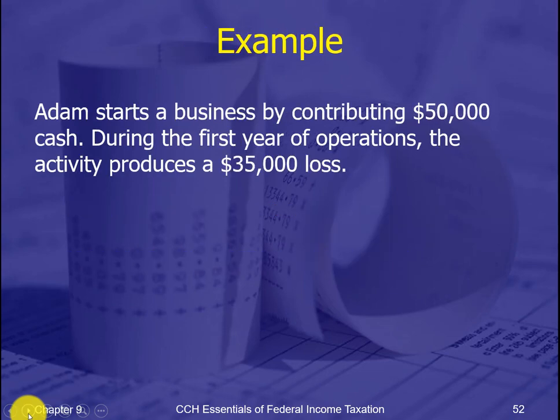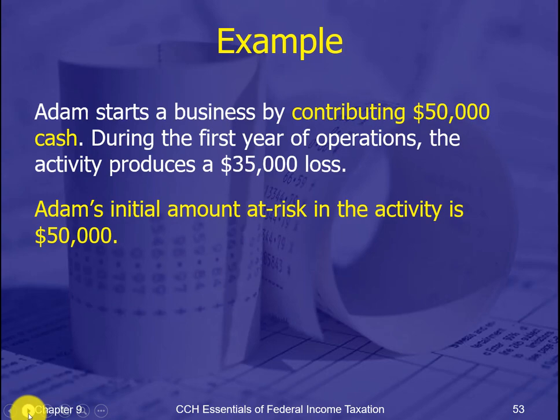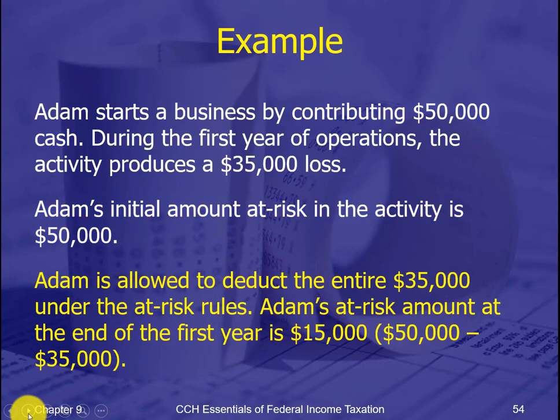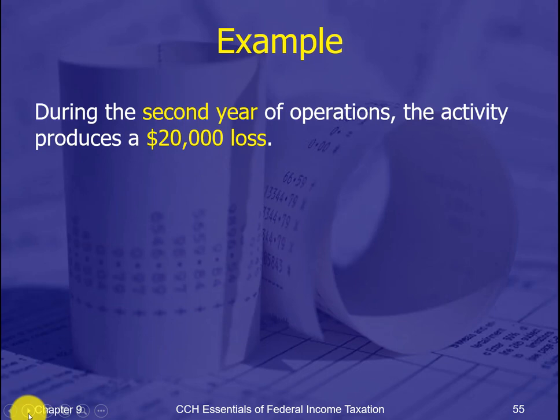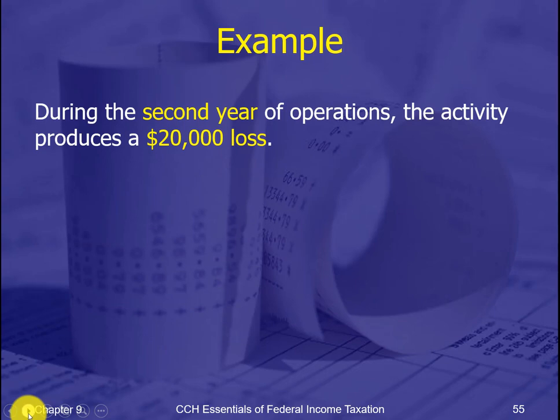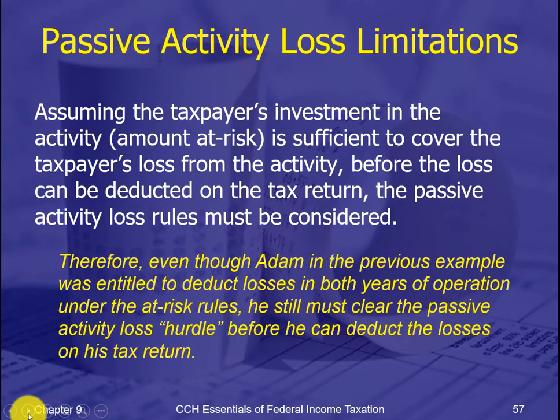So if we contribute $50,000 and that produces a $35,000 loss, you start out with $50,000 at risk, but your at-risk amount goes down as you deduct the $35,000 loss. So when you create a second-year $20,000 loss, you can't deduct it all because you only have $15,000 at risk. If you have more losses than you have at risk, you're not going to be able to use them — you'll have to carry them over to future years. That's the basic at-risk idea.